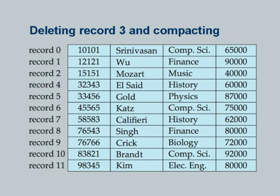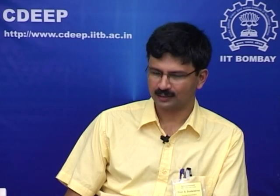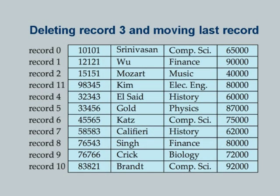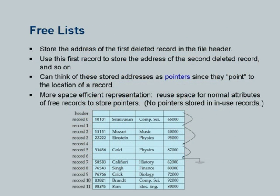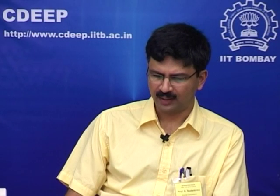Another option is to move the last record of the file up into the vacated space. Yet another option is to leave the space empty and keep a list of spaces which are empty — a free list. If you insert a new record, you can use those spaces. This free list approach is more commonly used than the previous alternatives.